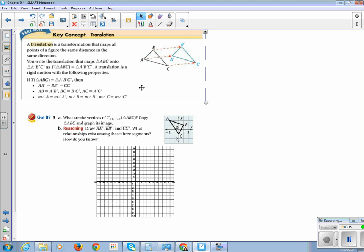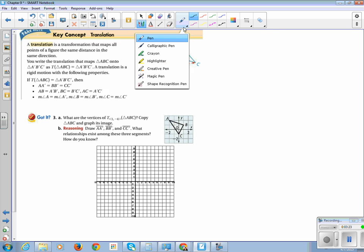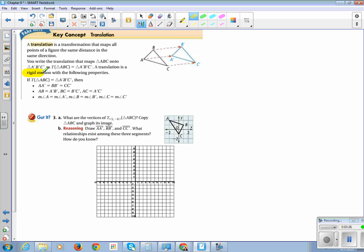A translation is a rigid motion. There's that vocabulary word. So let's highlight it. We saw it in vocabulary, so we might as well highlight it here with the following properties. Watch how these properties, because this will come back up in your questioning and in your lesson checks. The distance from A to A prime is equal to the distance from B to B prime and C to C prime. These distances are all equal.